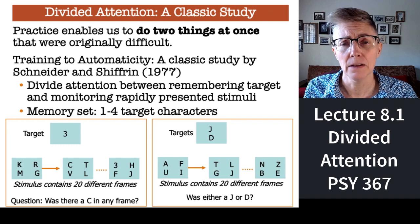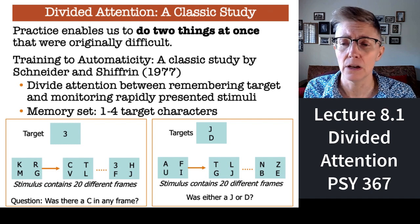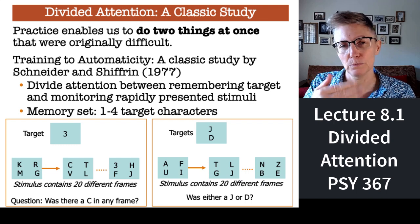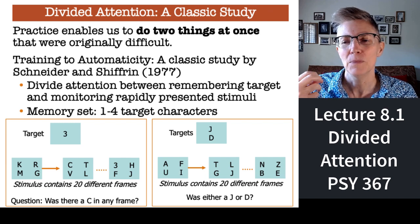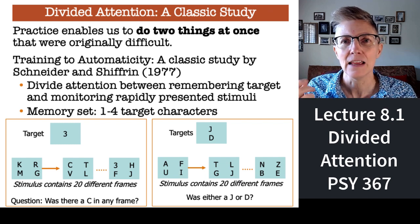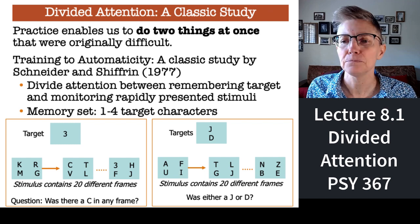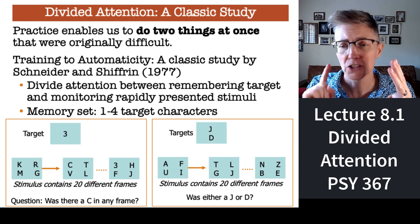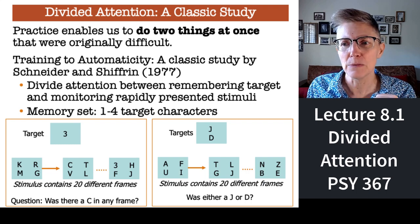First, people were given a target for a monitoring task — they had to see if that target appeared in a series of letters and numbers across 20 frames. Then at the end of the 20th frame, they were given a new question: did a specific letter, say the letter C, appear in the series they just saw? For example, on the left, if your target is the number three, you look at each display to see if three appears, and at the end you're asked whether there was a C in there.